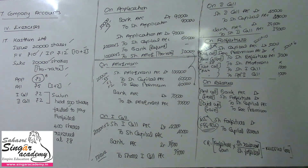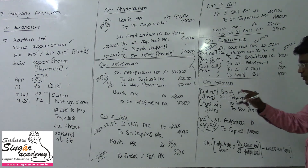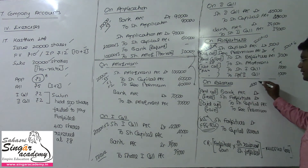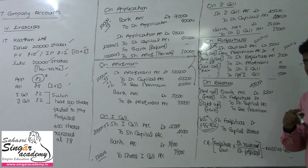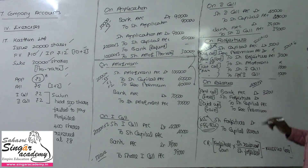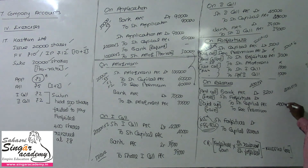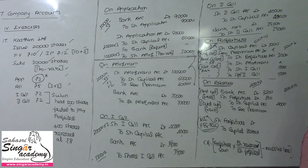On reissue: only 400 shares are reissued at ₹8 each. Bank is debited with 400 into ₹8 equals ₹3,200. Share Capital is credited at paid-up value of 400 into ₹10 equals ₹4,000. The difference of ₹800 is the reissue loss, which is debited to Share Forfeiture account. No securities premium is involved here.